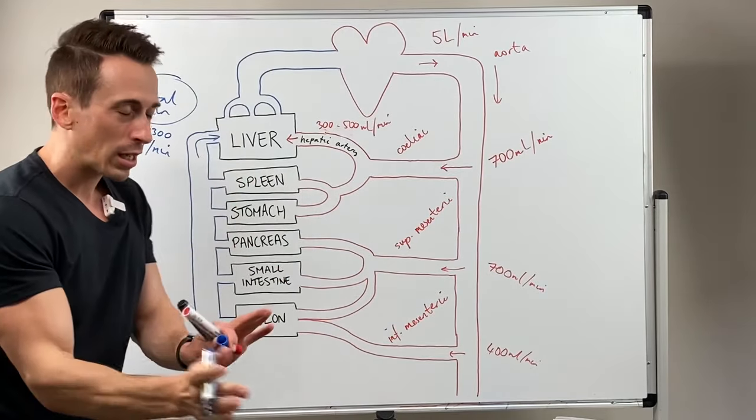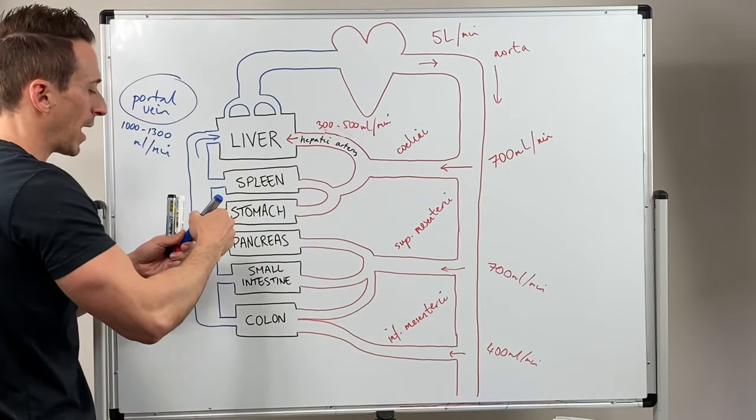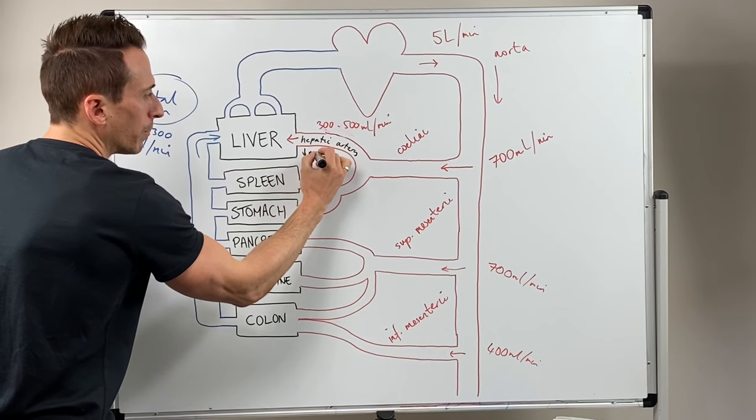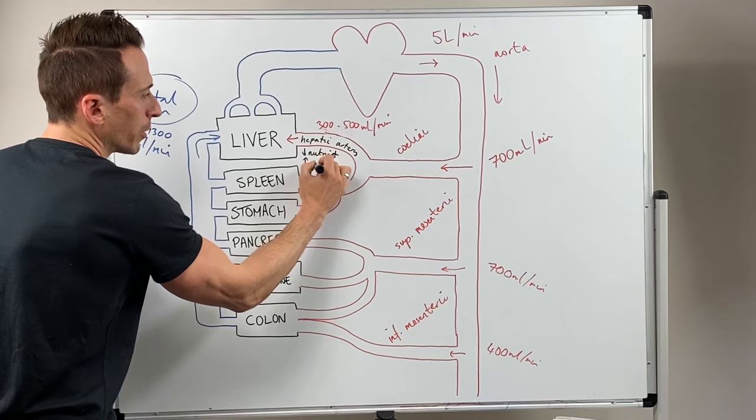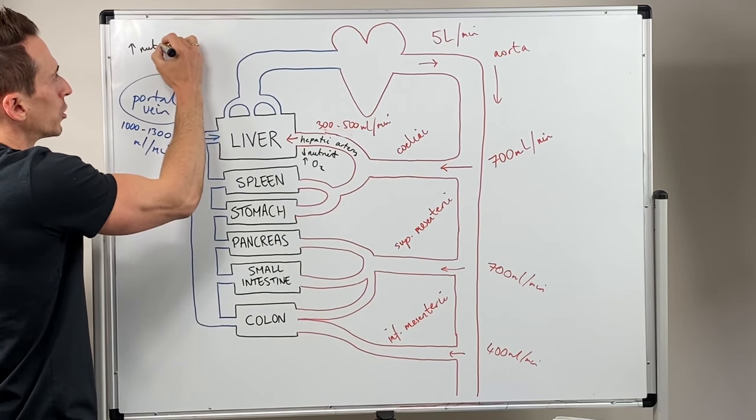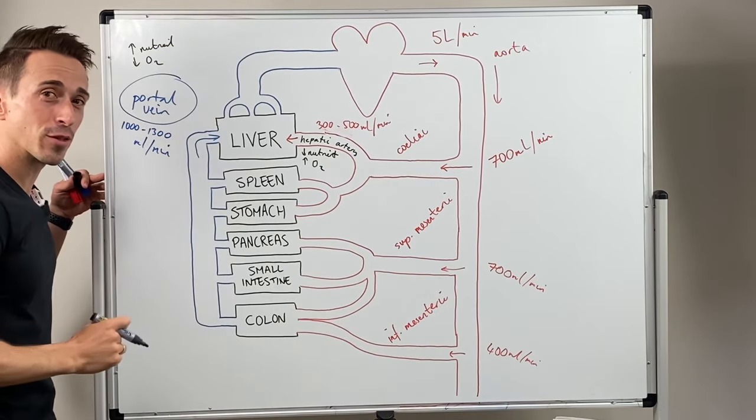So the liver has two dedicated blood supplies. You've got the hepatic artery, which is nutrient poor but oxygen rich and the portal vein, which is nutrient rich but oxygen poor. And most is coming from the portal vein.